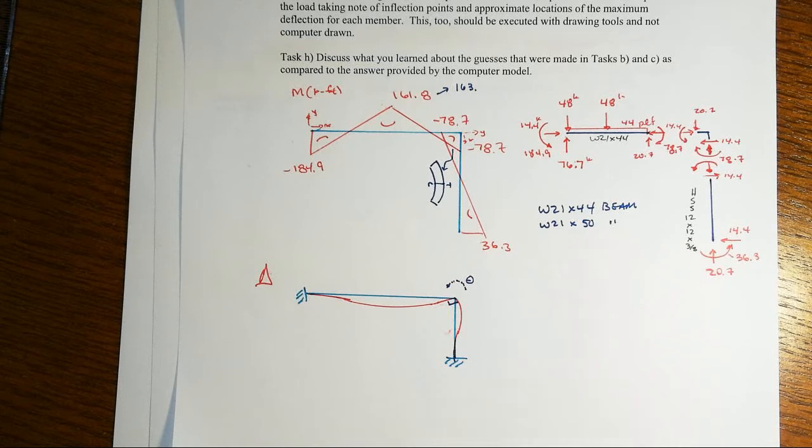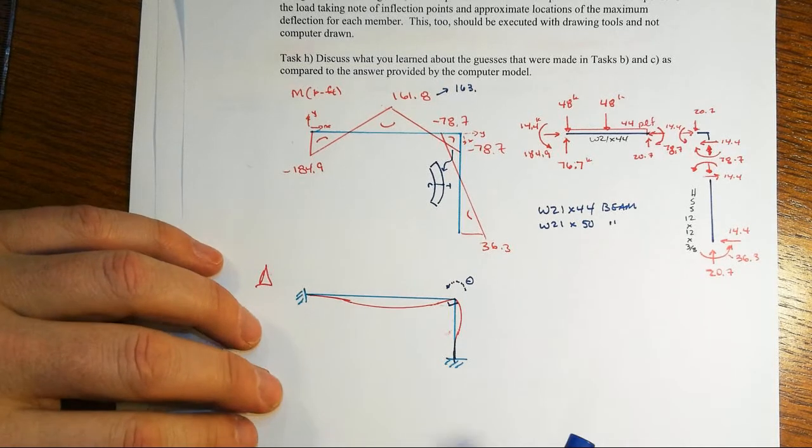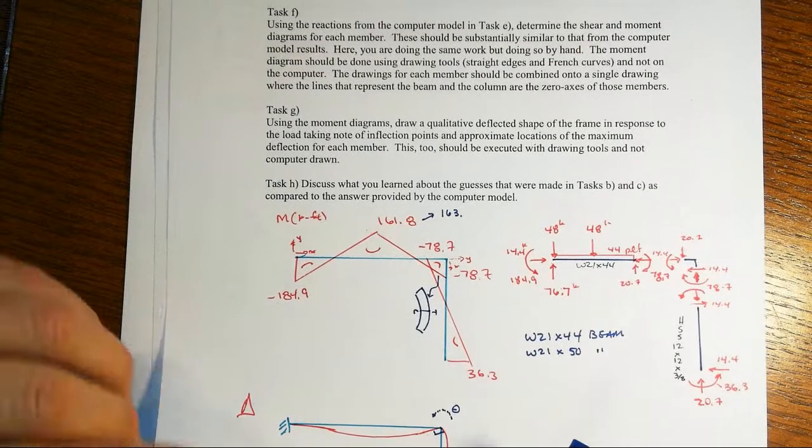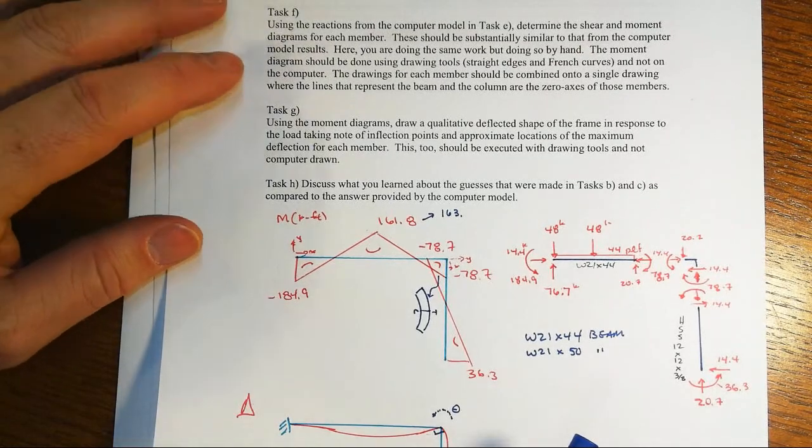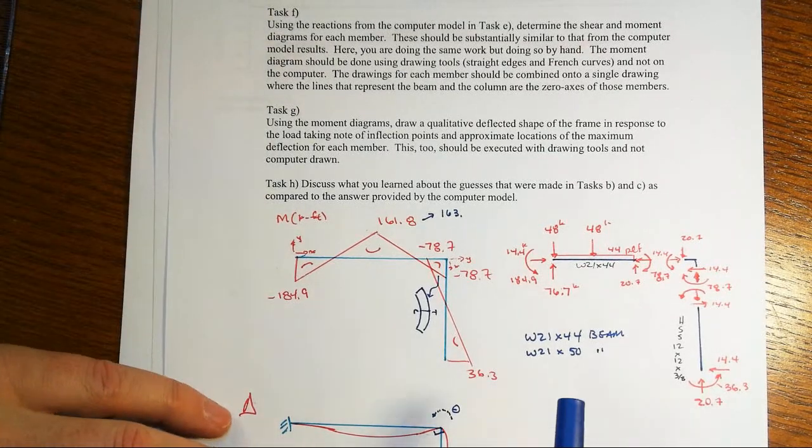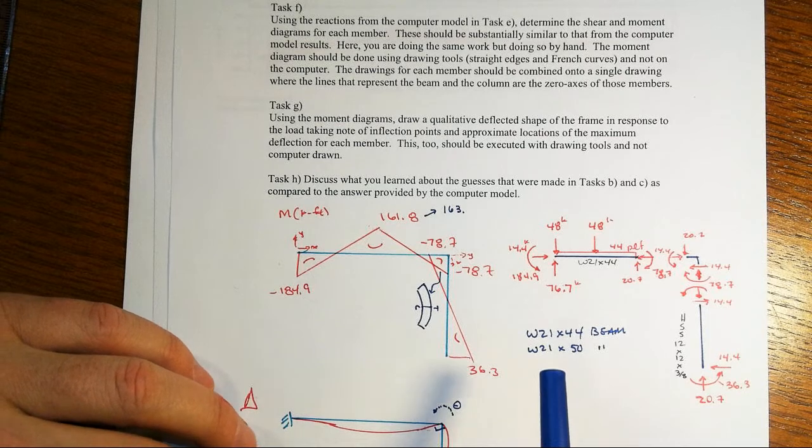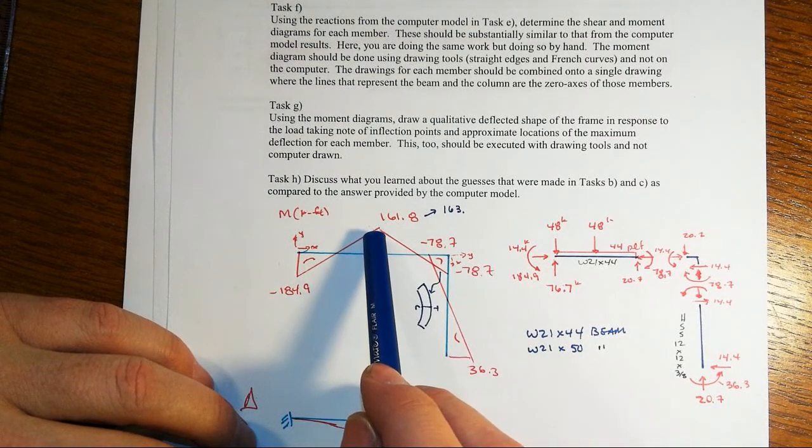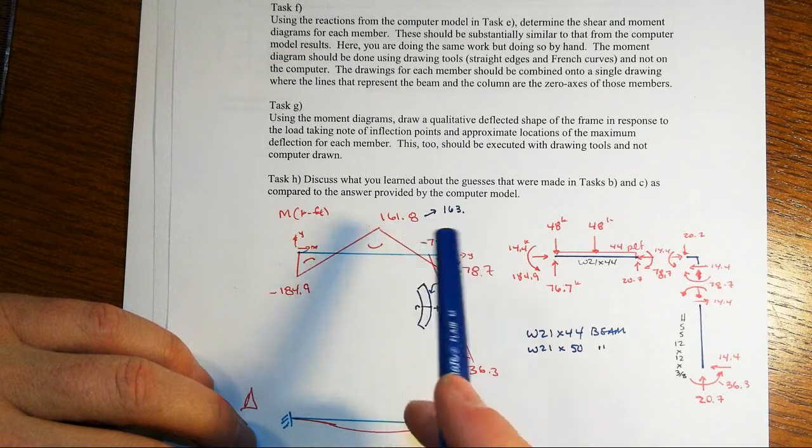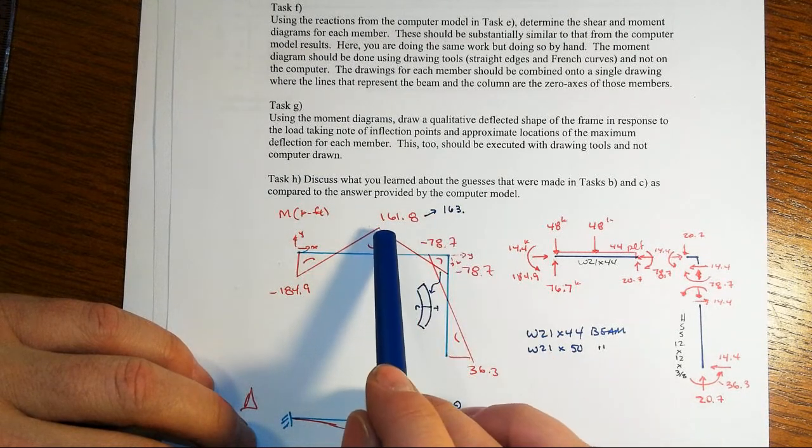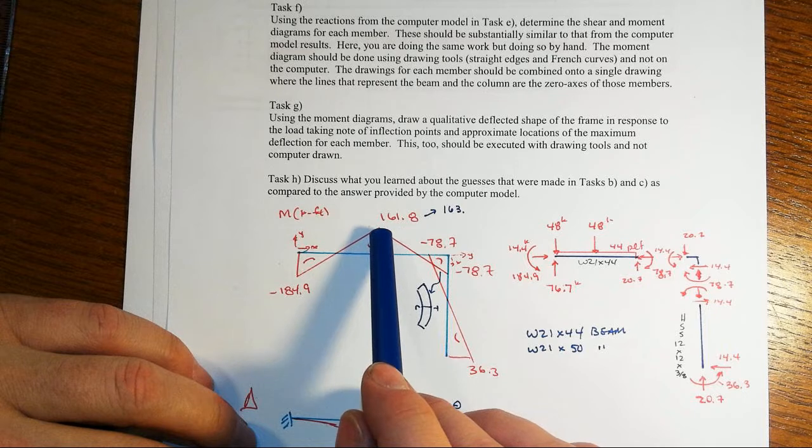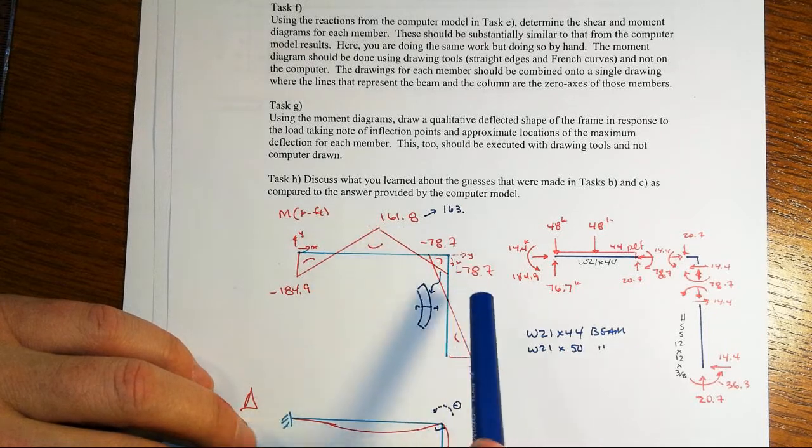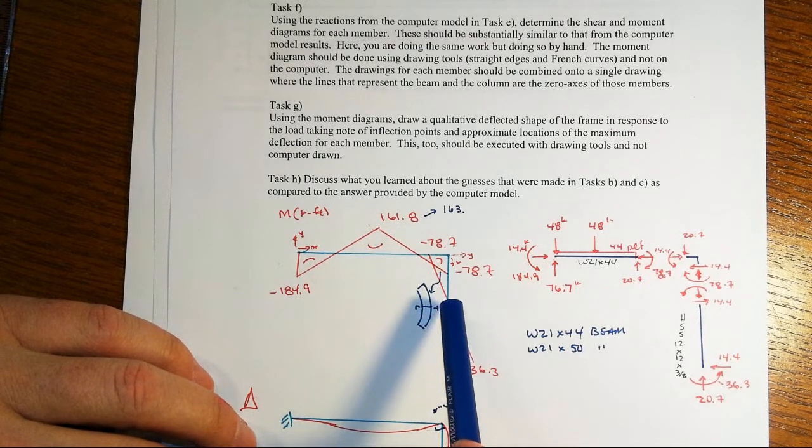Now vis-a-vis what happened in the earlier tasks B and C where we were looking at these two extremes, we thought that the maximum moment would be somewhere between 144 and 180 and we ended up at about 162, 163.